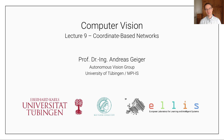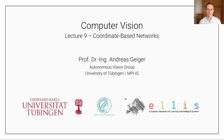Hi, and welcome to Computer Vision lecture number nine at the University of Tübingen. This is a lecture I've been looking forward to for a while, as it is about coordinate-based neural networks or implicit shape representations, a topic my group has worked a lot on. We proposed one of the first models in this area called occupancy networks, which established an entire field and sparked more than 1000 follow-up works within one or two years.